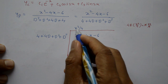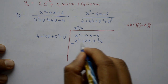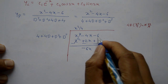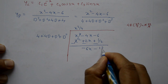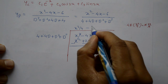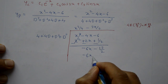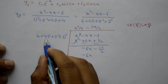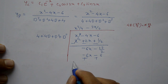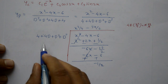Next quotient term: -6x divided by 4 = -3x/2. Multiply: 4·(-3x/2) = -6x, cancel. Also -6 minus (-1/2) = -13/2. Then 4D·(-3x/2) = -6, and remaining is -6 minus (-13/2). Subtracting gives remainder. Next quotient term from constant: -13/2 divided by 4 gives -13/8. Then 4·(-1/8) = -1/2, and -13/2 + 6 = -1/2. Remainder is 0.